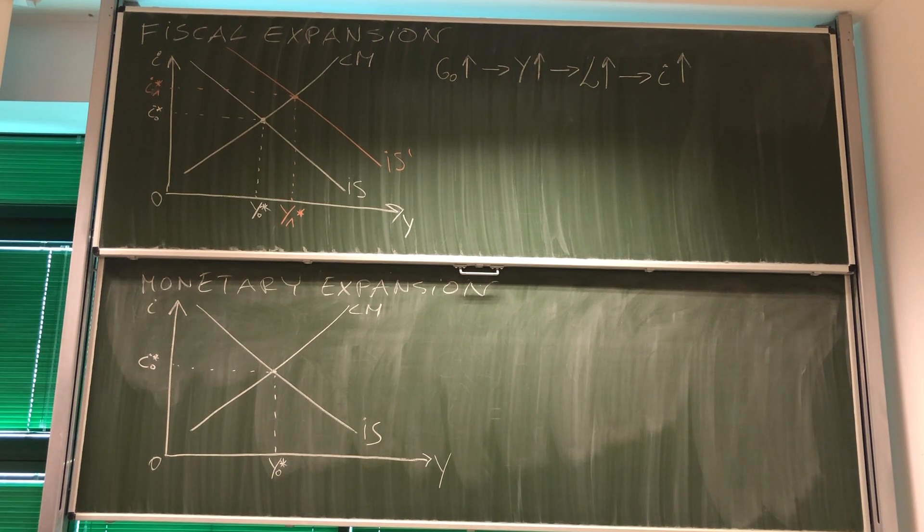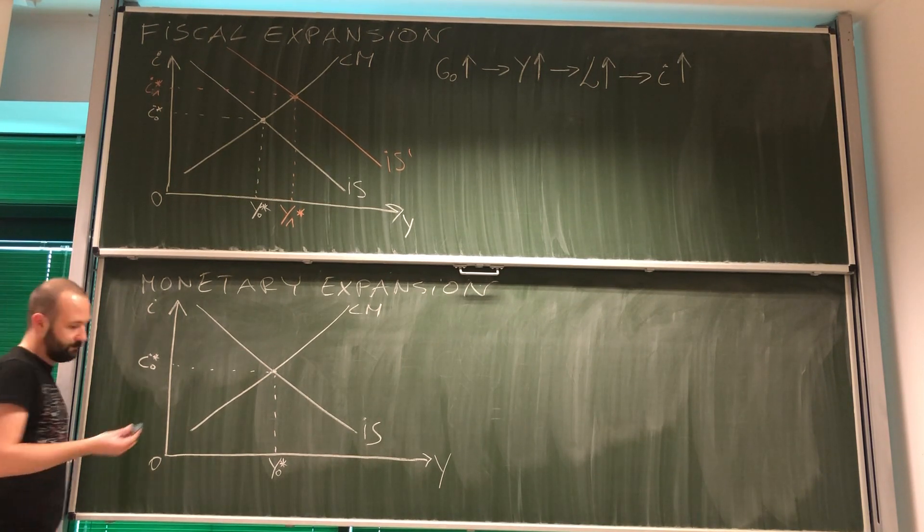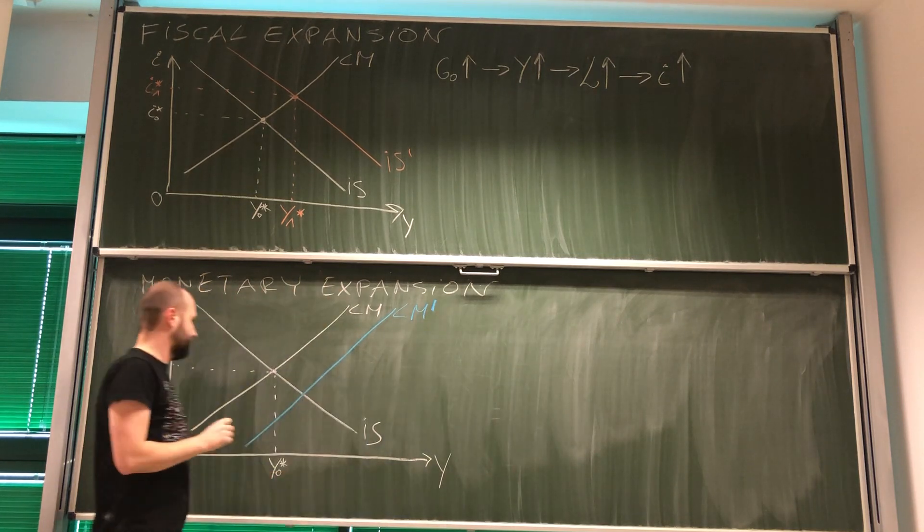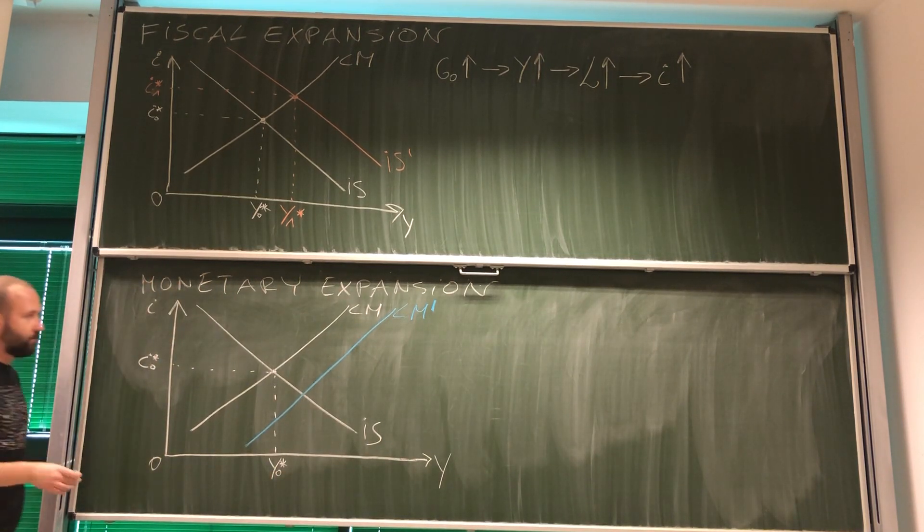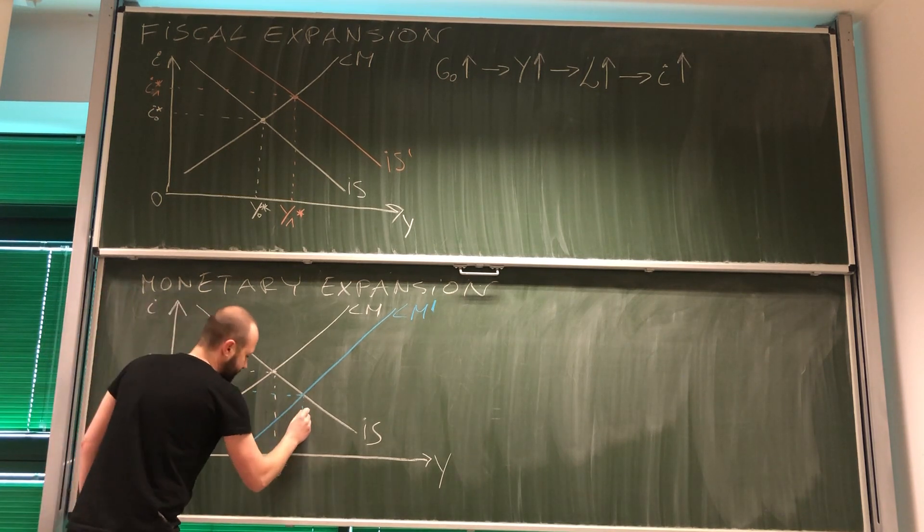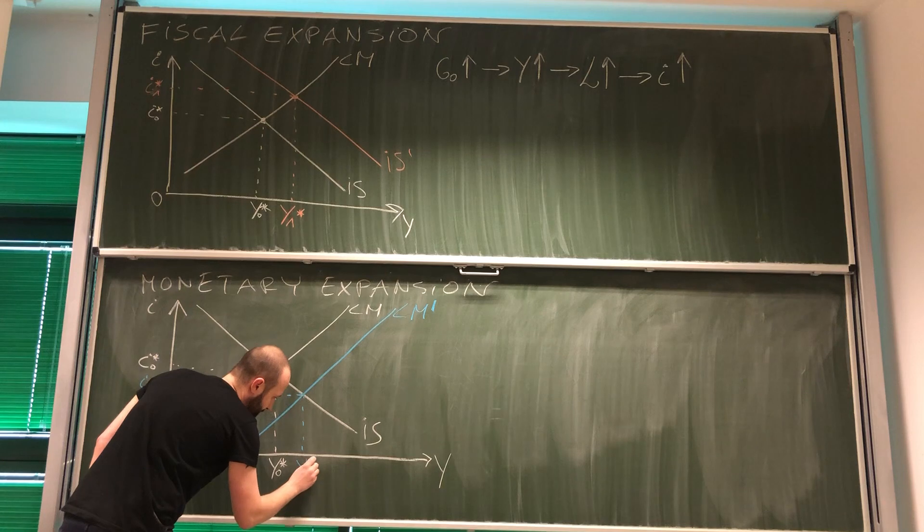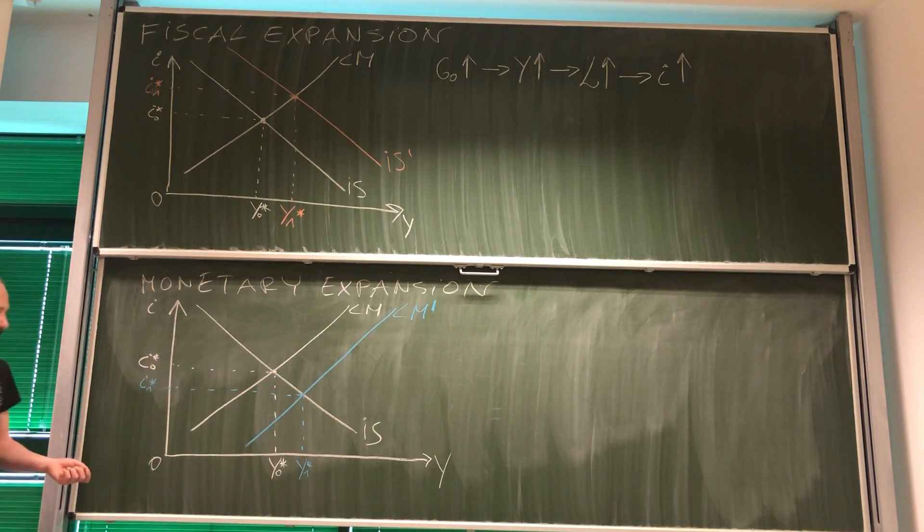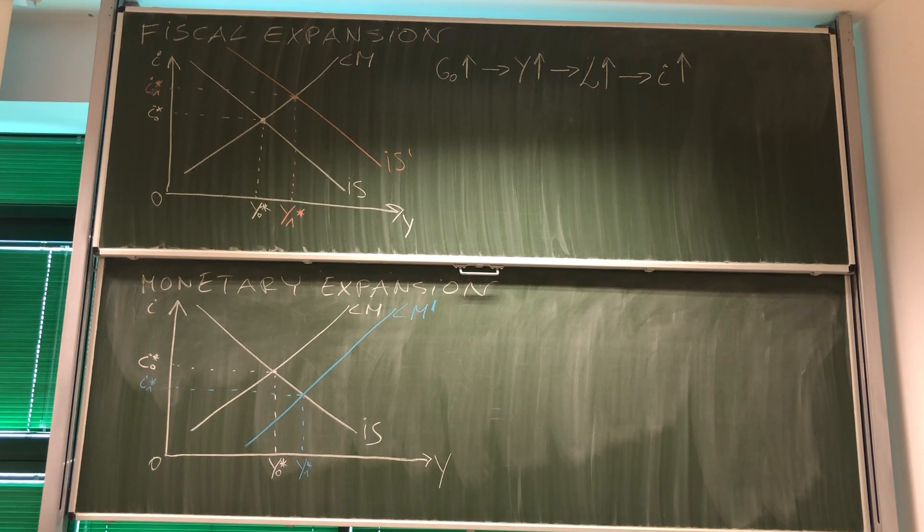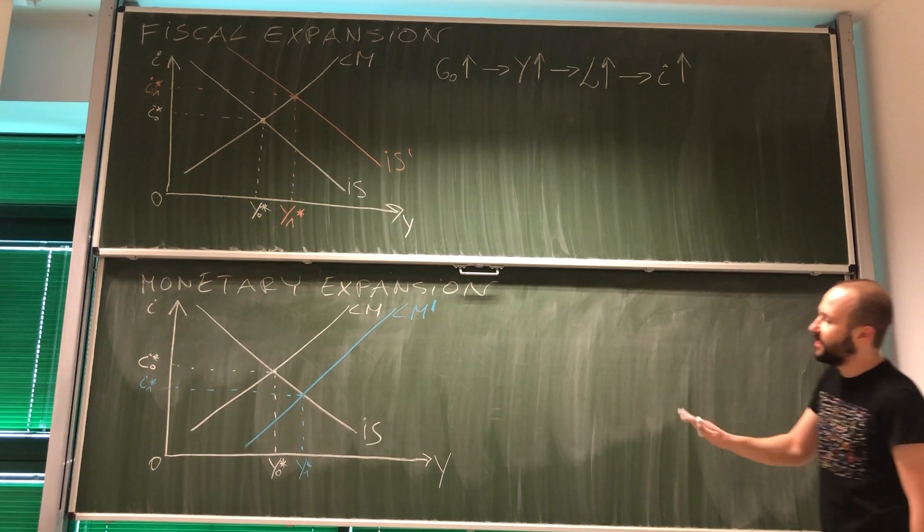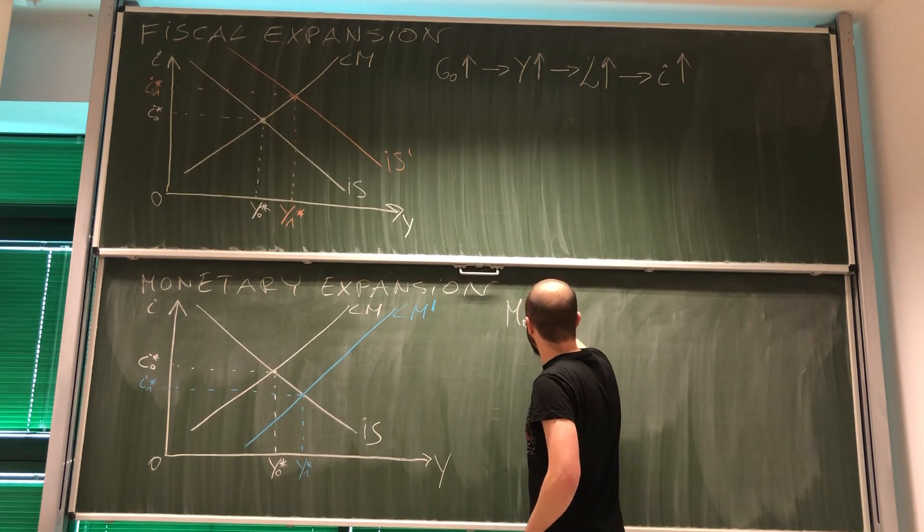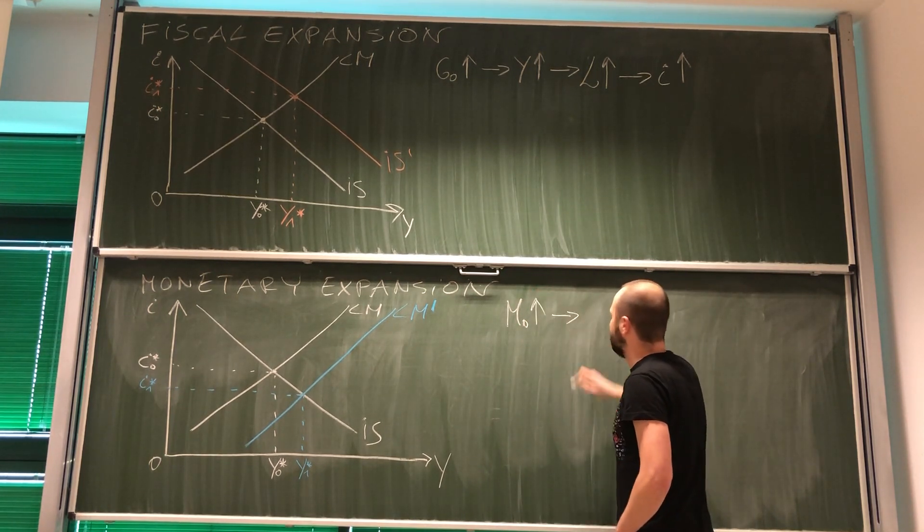If central bank increases money supply, this moves LM to the right. And again, we see two consequences of such policy. We see that this is associated with lower interest rate and higher GDP. Now, again, what is most crucial for us and what we are going to use in IS-LM-BP framework is the simple mechanism behind this increase in GDP.